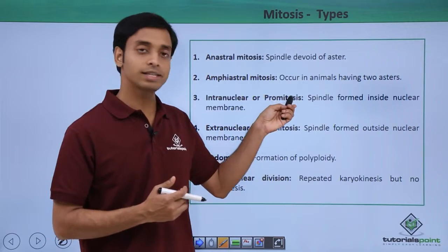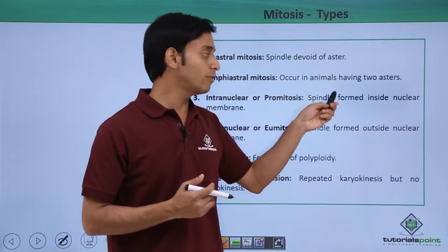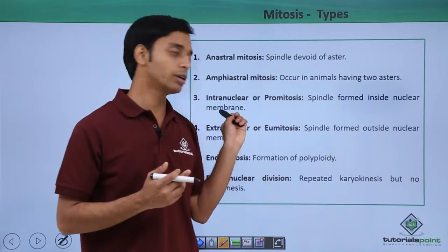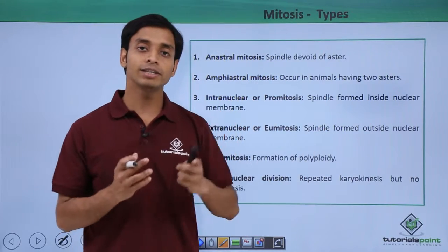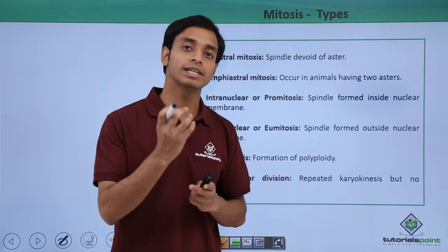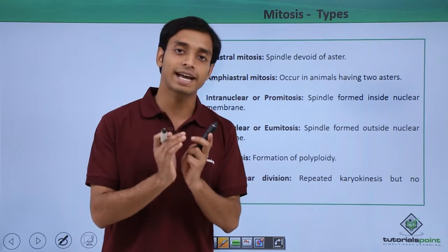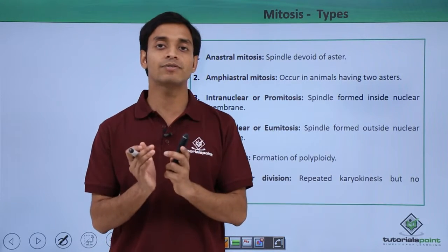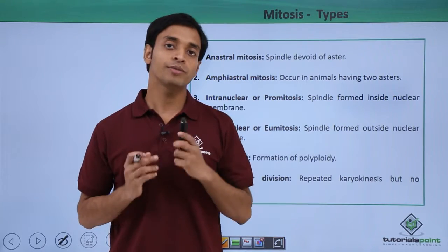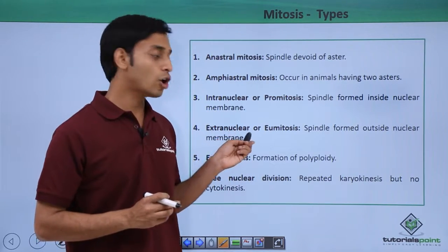Intranuclear or pro-mitosis is so called because spindle formation occurs inside the nuclear membrane. Here the nuclear membrane does not dissolve into the cytoplasm, so the nuclear membrane remains intact and the spindles that are formed are inside this nuclear membrane.